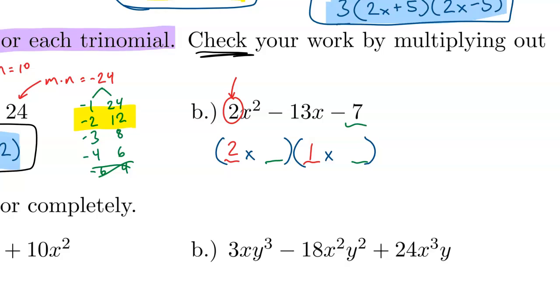The constant part of the binomial has to multiply to equal negative 7. So I don't really have many options. I just have negative 1 and positive 7, or negative 7 and positive 1. Because I want the middle to be negative, I think this is probably going to be my better choice. Let me pair up the negative 7 so that it multiplies with the 2x and put the plus 1 with the x binomial.